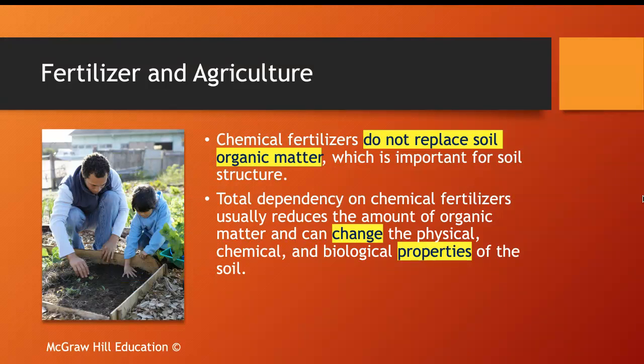The problem is that chemical fertilizers do not replace soil organic matter — they are sort of like fake nutrition. They do not stay and are not as rich as the soil organic matter produced by nature over many years. Remember, it takes 500 years to generate one inch of topsoil. Those chemicals drastically change the properties of the soil — they affect physical properties like aeration and filtration rate, and they change chemical and biological properties, including the organisms living in the soil.